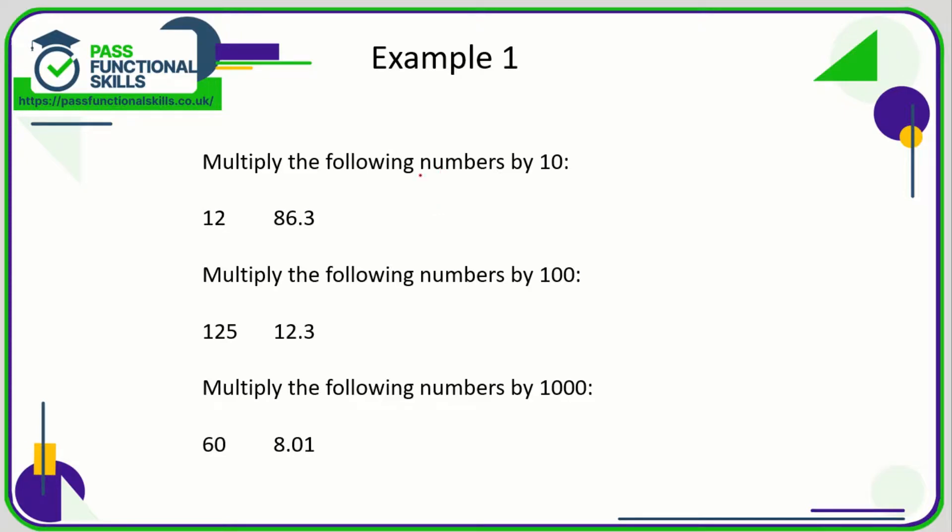Let's take a look at a couple of examples. We're going to multiply the following numbers by 10. So 12 times 10: if it's a whole number, stick a zero on the end. If it's a decimal, move the decimal point one position to the right.